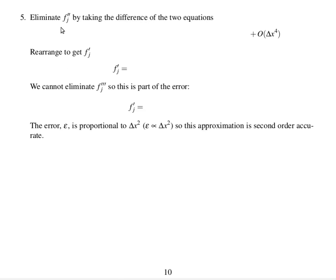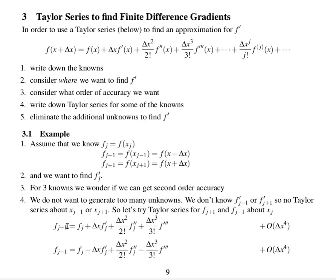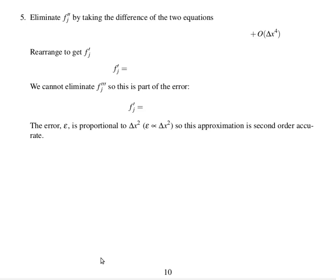So, subtracting one equation from the other, try to stay a step ahead. You can pause the video and do that equation minus that equation to fill in this line and resume the video when you've written something down. This is what you should have. fj plus 1 minus fj minus 1 is equal to 2 delta x fj dashed plus delta x cubed over 3 times fj triple dashed.